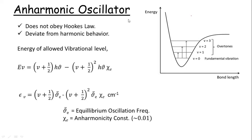Then we have the anharmonic oscillator. In real cases there is some anharmonicity, so the molecule does not obey Hooke's law and deviates from harmonic behavior. The energy is Eᵥ = (V + ½)hν − (V + ½)²hνξₑ. In terms of wave number: εᵥ = (V + ½)ν̄ₑ − (V + ½)²ν̄ₑξₑ, where ν̄ₑ is the equilibrium oscillation frequency and ξₑ is the anharmonicity constant, which is approximately 0.01.